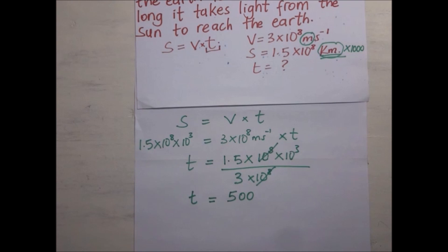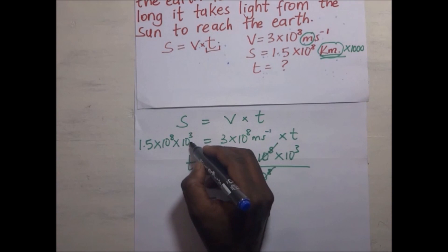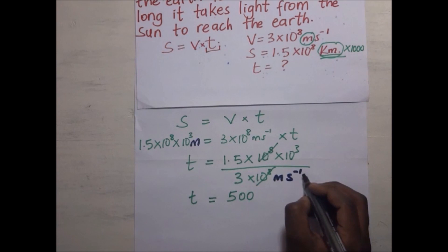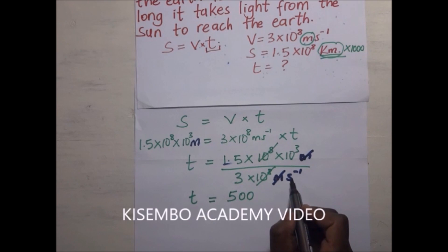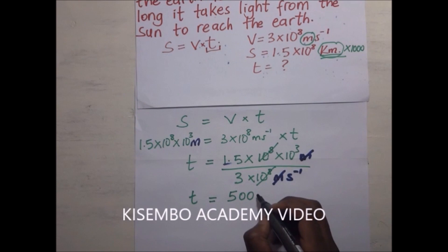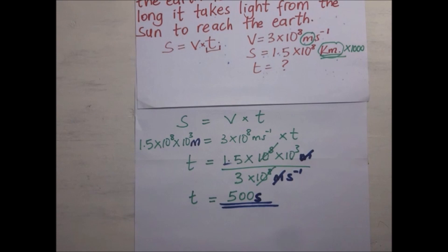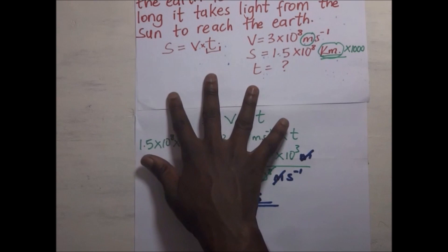Solving for T gives 500 seconds. The meters cancel out, leaving our value of time in seconds. Since the question does not specify the unit for time, we can leave our answer as 500 seconds.